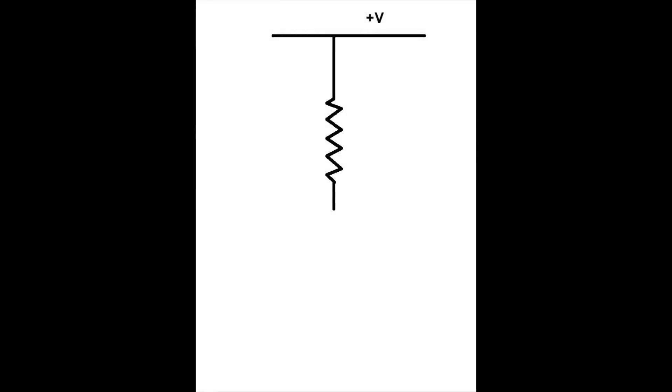If we think of the valve as being a resistor and we hang it from a positive voltage rail, now we connect to that the cathode resistor and we connect the bottom end of that resistor to the negative rail.